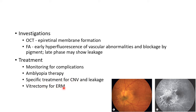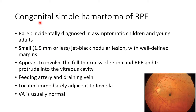Vitrectomy can be done for epiretinal membrane. Congenital simple hamartoma of retinal pigment epithelium is a rare condition, usually incidentally diagnosed in asymptomatic children and young adults. It presents as a small, less than or equal to 1.5 mm, jet black nodular lesion with well defined margins. It appears to involve the full thickness of retina and RPE, protrudes into the vitreous cavity, and is usually associated with a feeding artery and a draining vein. It is usually located immediately adjacent to the foveola, and visual acuity is usually normal.